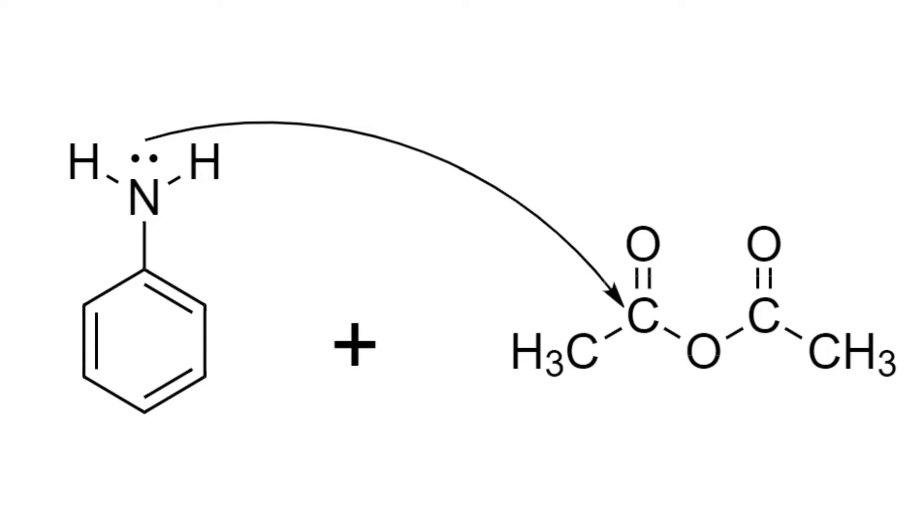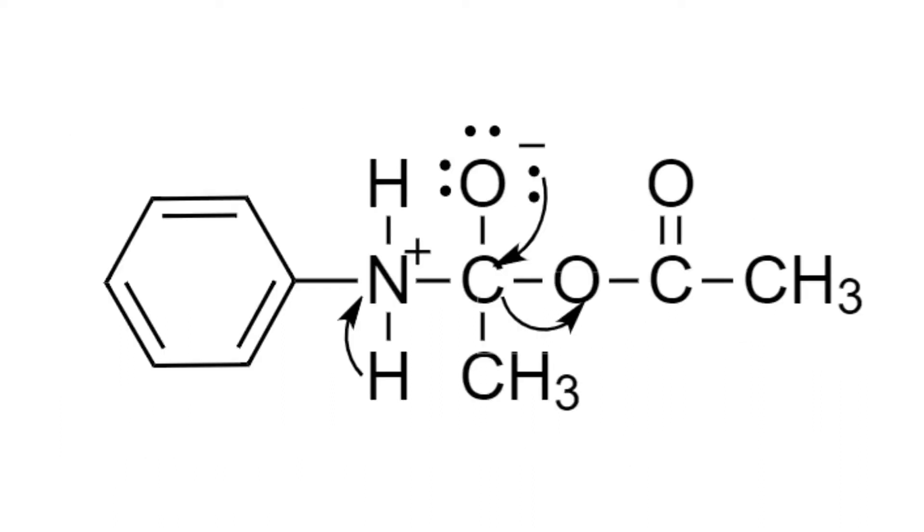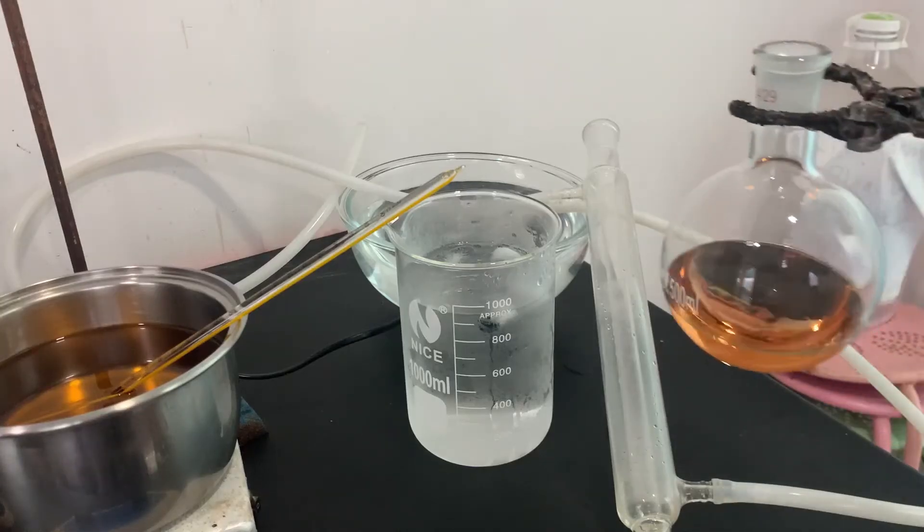The reaction happening here is called an acetylation reaction. The nucleophilic nitrogen from the aniline attacks one of the carbonyls on the acetic anhydride. Electrons from the carbon then get pushed up to the oxygen. This forms a tetrahedral intermediate, which produces our desired acetanilide and also acetic acid as a side product.